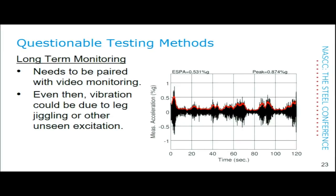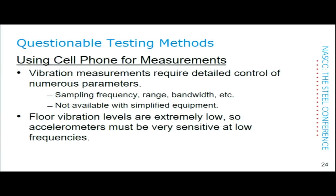I've also seen comments about using cell phones for measurements — all of our cell phones have accelerometers. The problem is that vibration measurements require extremely detailed control over many parameters: sampling frequency, input range, voltage, bandwidth, and so on. We spend a lot of effort controlling those parameters exactly with proper equipment. With very simplified equipment like a cell phone, we're not going to have that level of control, so we need to watch out for that.